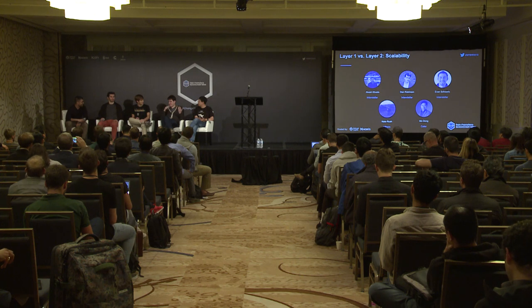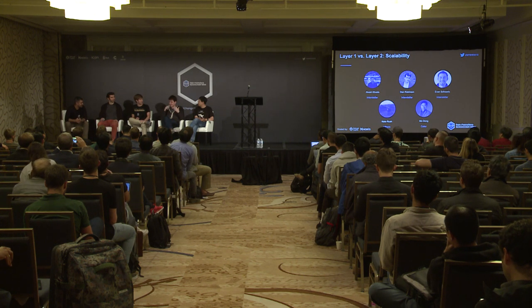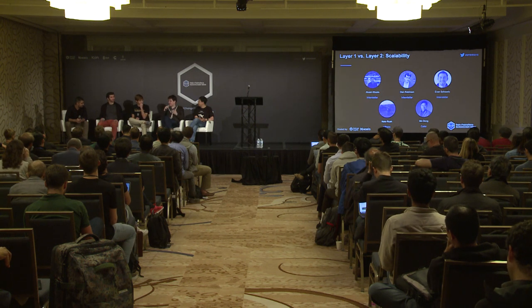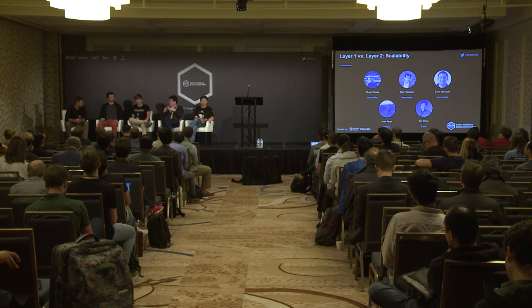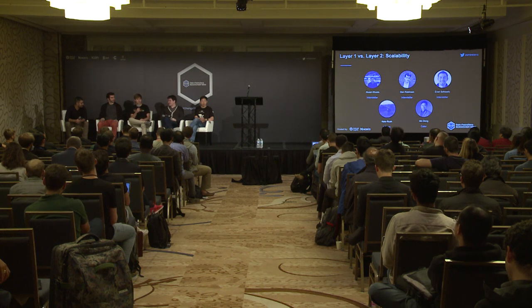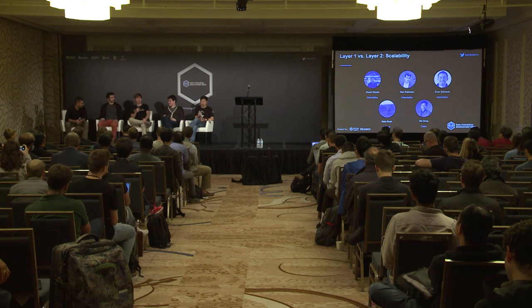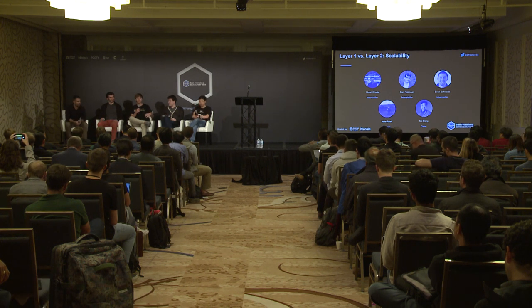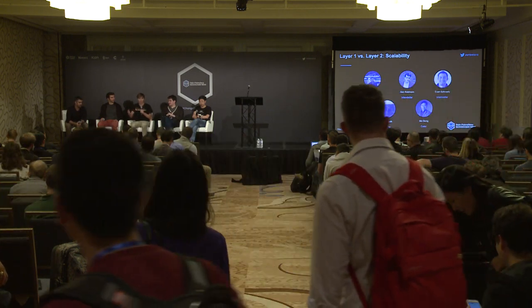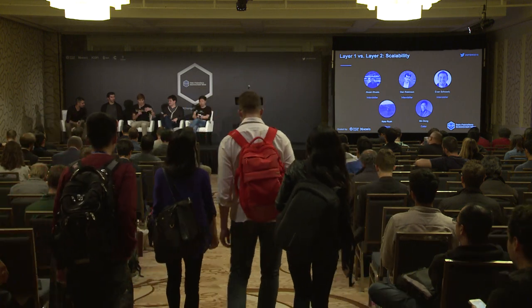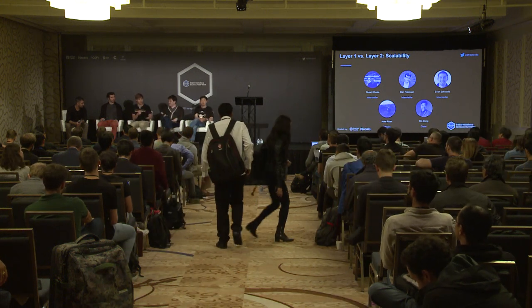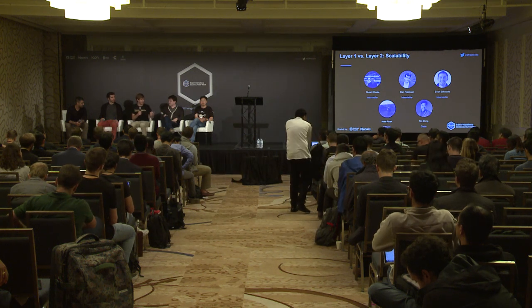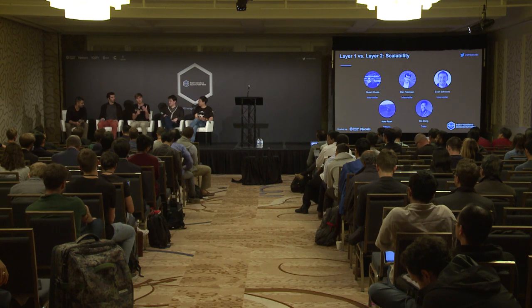Why do you consider sharding to be a layer one rather than a layer two solution, given that you're taking transactions off the main blockchain? The kind of distinguisher for me is the question of in-the-protocol versus out-of-the-protocol. In sharding, even though any individual shard might not have awareness of the entire system at any given point, the shards as a whole collectively have an awareness of what's going on. I distinguish it as in the protocol versus on top of the protocol.